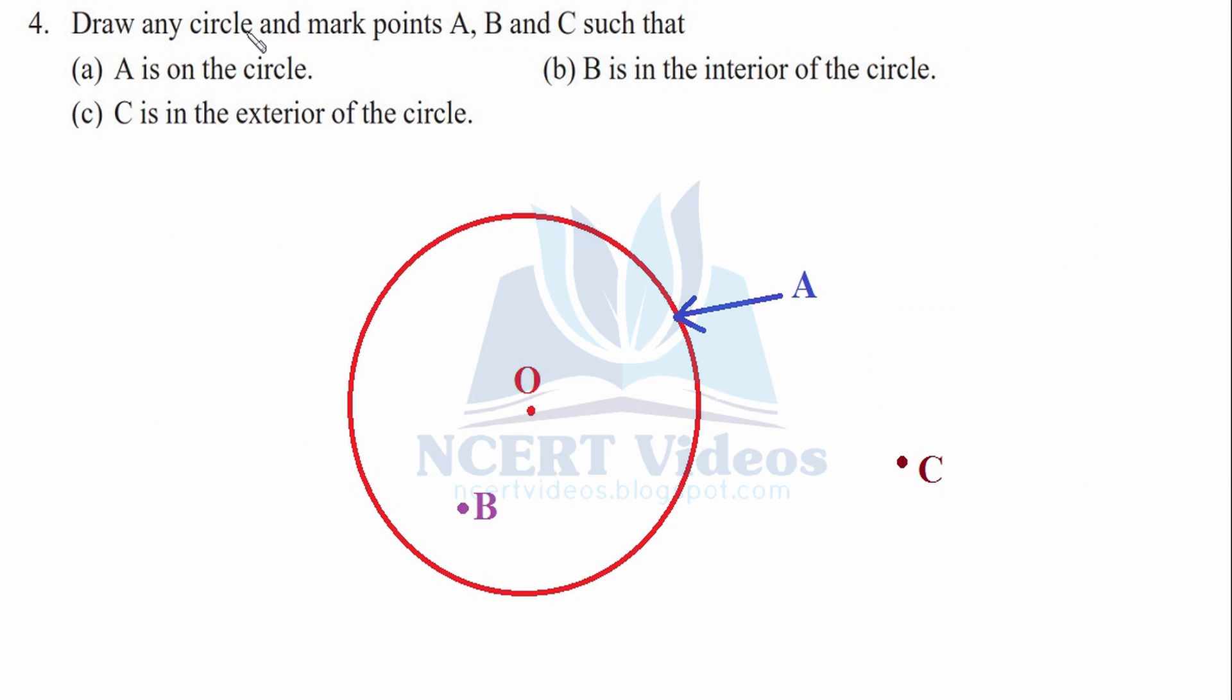Fourth, draw any circle and mark points A, B, C such that A is on the circle, B is in the interior, C is in the exterior of the circle. This is your required circle. You can name the center as O. This is the circumference of the circle, outer side. On the circle means on the circumference of the circle. B is the interior of the circle. Interior means inside this circumference. Whatever points lie inside this circumference are called interiors. Now, C is in the exterior. Whatever points lie outside of this circumference.